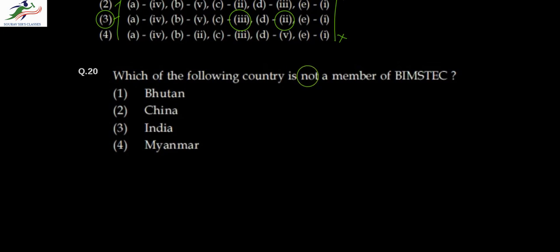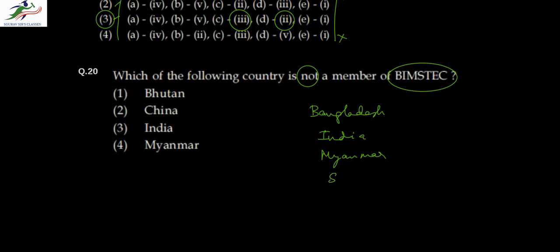The last question asks which of the following countries is not a member of BIMSTEC. BIMSTEC stands for — B for Bangladesh, I for India, M for Myanmar, S for Sri Lanka, T for Thailand, and then Bhutan and Nepal. So Bhutan is there, India is there, Myanmar is there — China is the only country not in the list of BIMSTEC members.